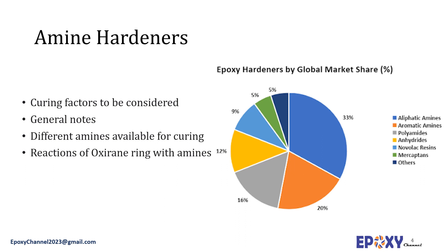A cured epoxy resin should have a tightly cross-linked molecular structure for optimal physical and chemical properties. During the curing process, an epoxy resin is combined with a compatible hardener to start the polymerization reaction. Curing characteristics such as pot life and cure speed depend heavily on the choice of hardener. The processing properties — transparency, adhesion, viscosity, reactivity — and the final properties — mechanical, glass transition temperature, and heat resistance of the cured polymer network — are also heavily dependent on the employed hardener. The most important hardener group for curing epoxies is amine-based hardeners.